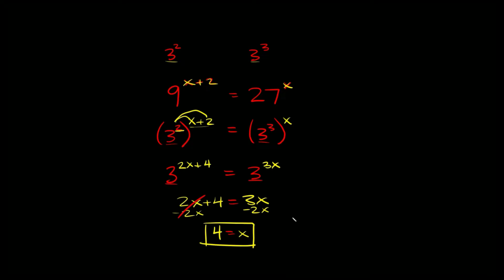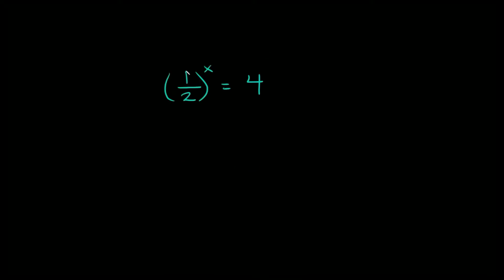Now let me show you what you do when you have fractions, because that definitely complicates things. If we have 2 raised to the negative first power, whenever you have a number raised to a negative exponent, you can write it as 1 over that number with a positive exponent — so 2 to the negative 1 is 1 over 2. This works the same way in the opposite direction: if you have a fraction like 1 over 2, you can rewrite it as 2 raised to the negative first power.